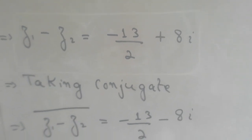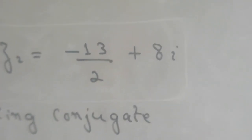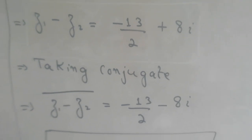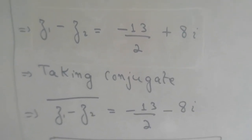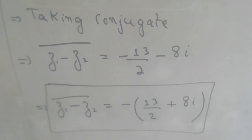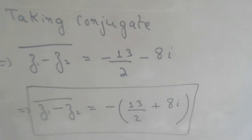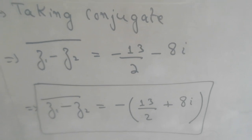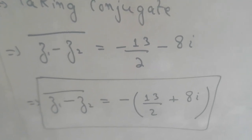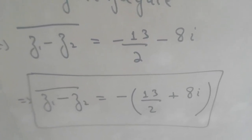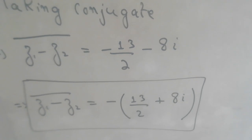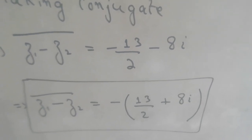Now taking the conjugate of z1 minus z2. When we take the conjugate, the sign of iota changes — plus iota becomes minus iota. So the conjugate of z1 minus z2 gives minus 13 upon 2 minus 8 iota. Taking common minus sign, the whole conjugate of z1 minus z2 equals 13 upon 2 plus 8 iota. This is our left hand side answer.